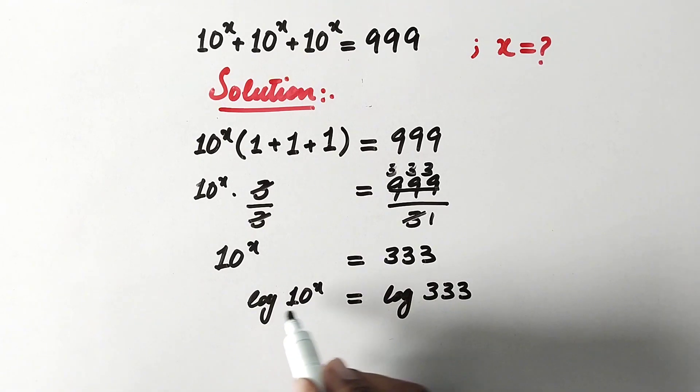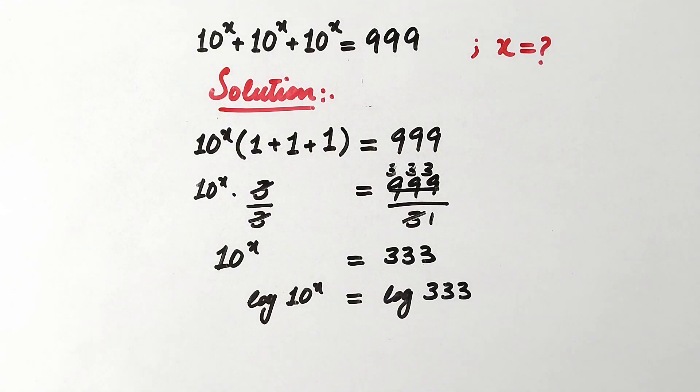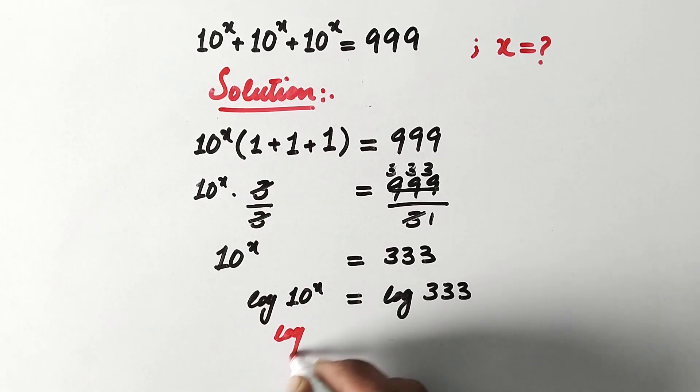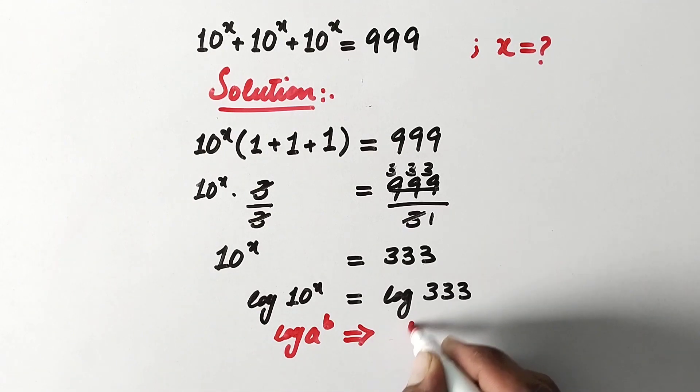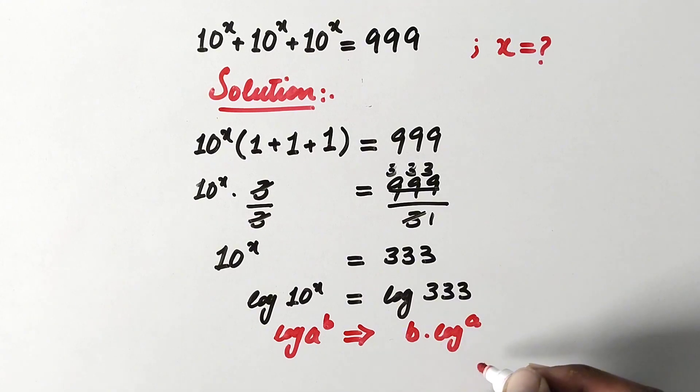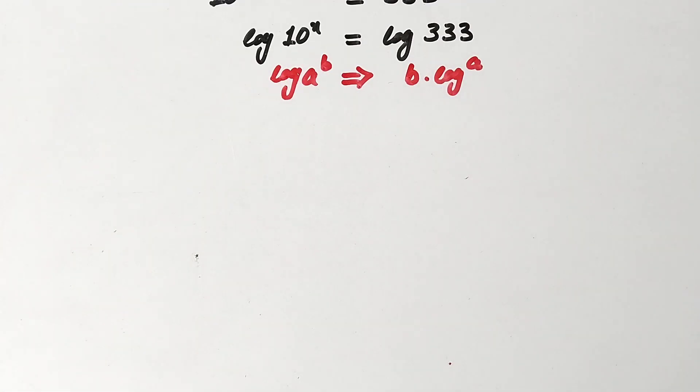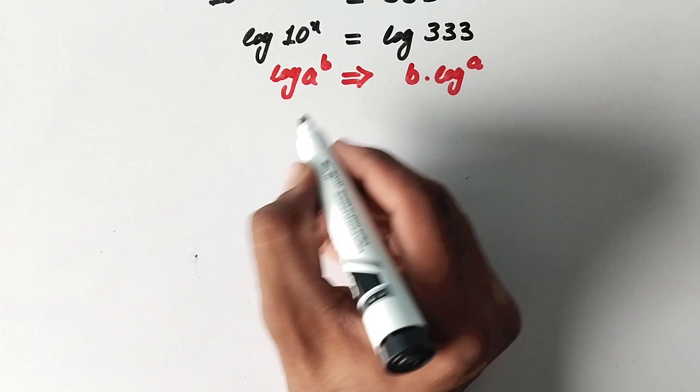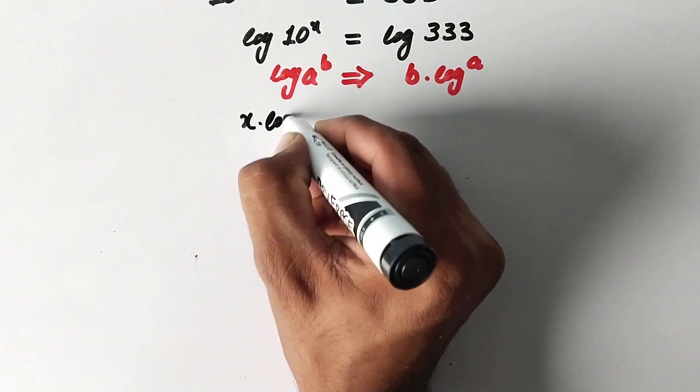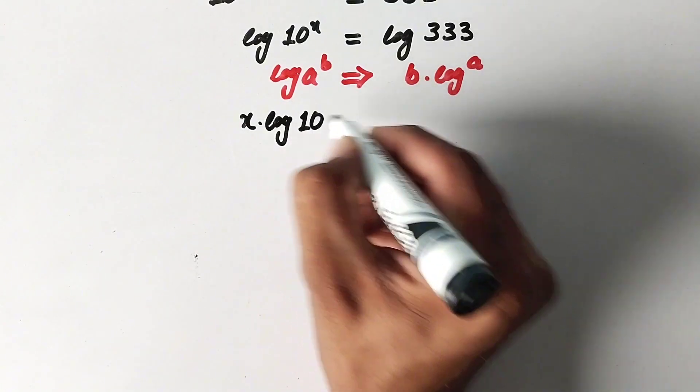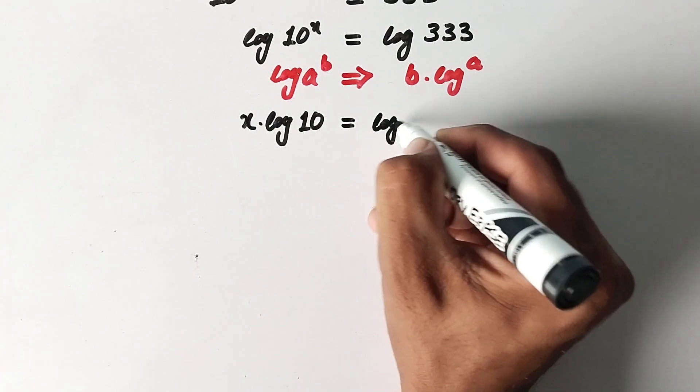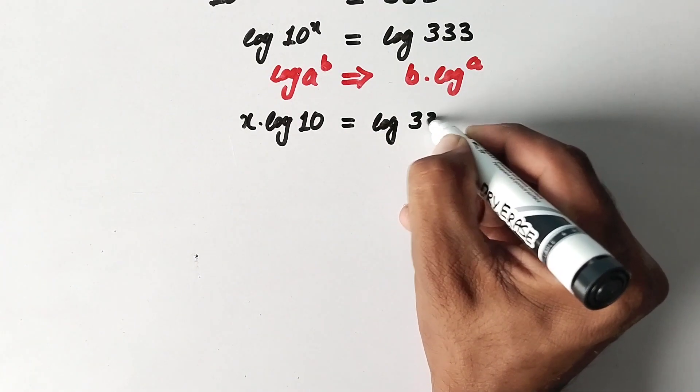And here we will apply a property of logarithm. As we know that log a to power b can also be written as b times log a. So now this term will be x times log 10 equals log 333.